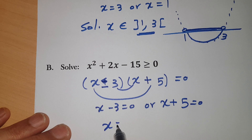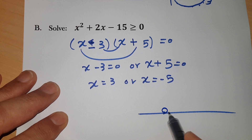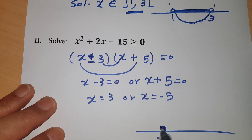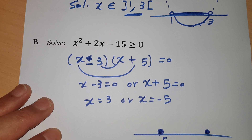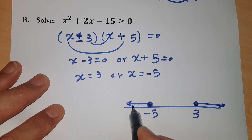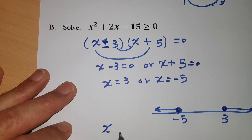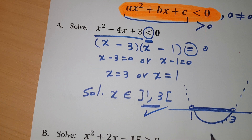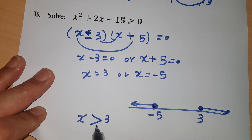So x - 3 = 0 or x + 5 = 0, giving x = 3 or x = -5. Draw a number line with -5 to the left and 3 to the right. Use closed circles because there's an equal sign with the ≥. I want this function to be positive — the function is positive in the outer parts of the interval. The solution is x ≥ 3 or x ≤ -5, which can also be written in interval form.